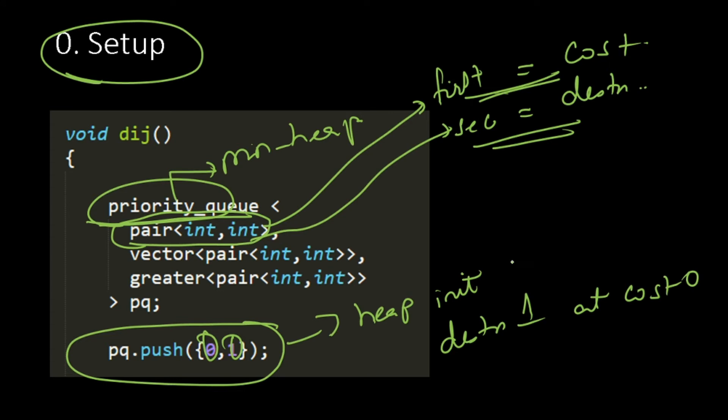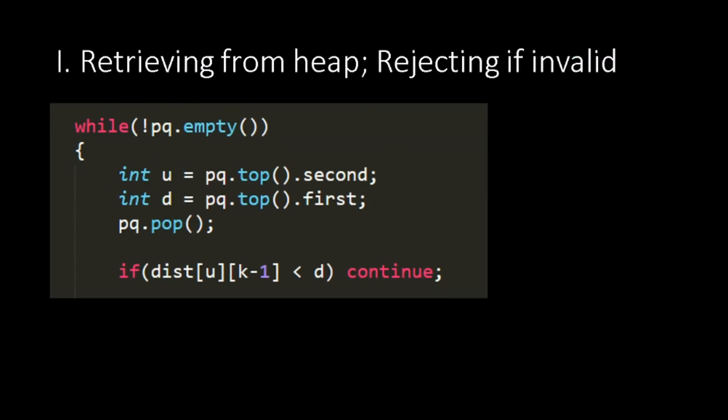You can start at destination, your source is 1, source is 1. So you can reach that destination at cost 0. So that is your setup. Now we will continue.